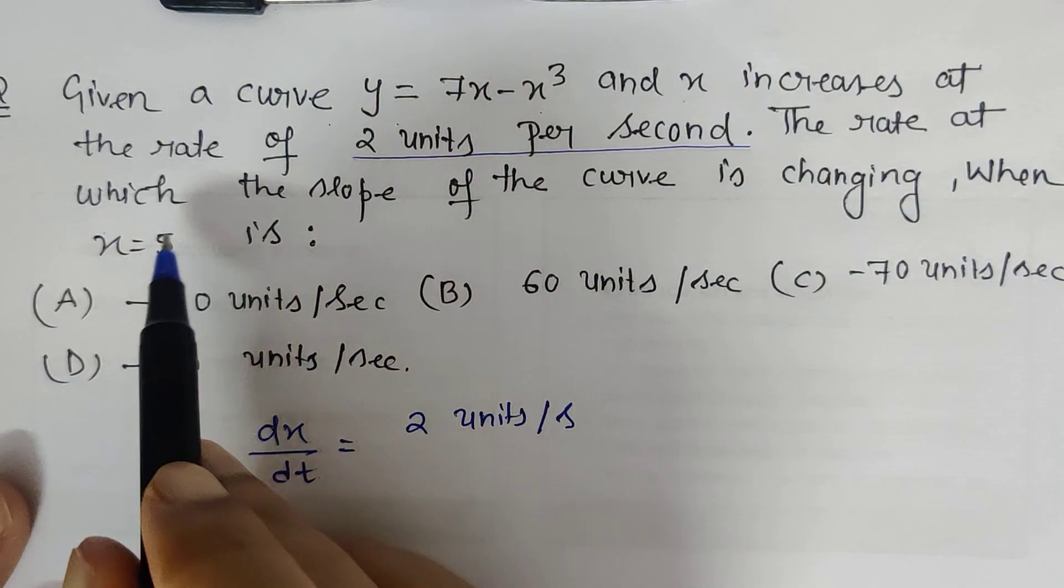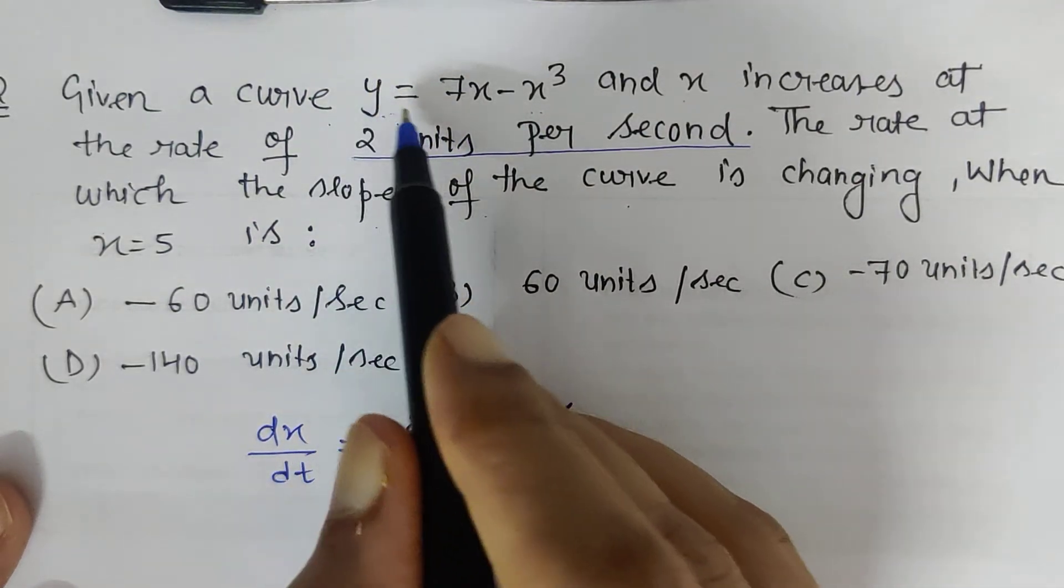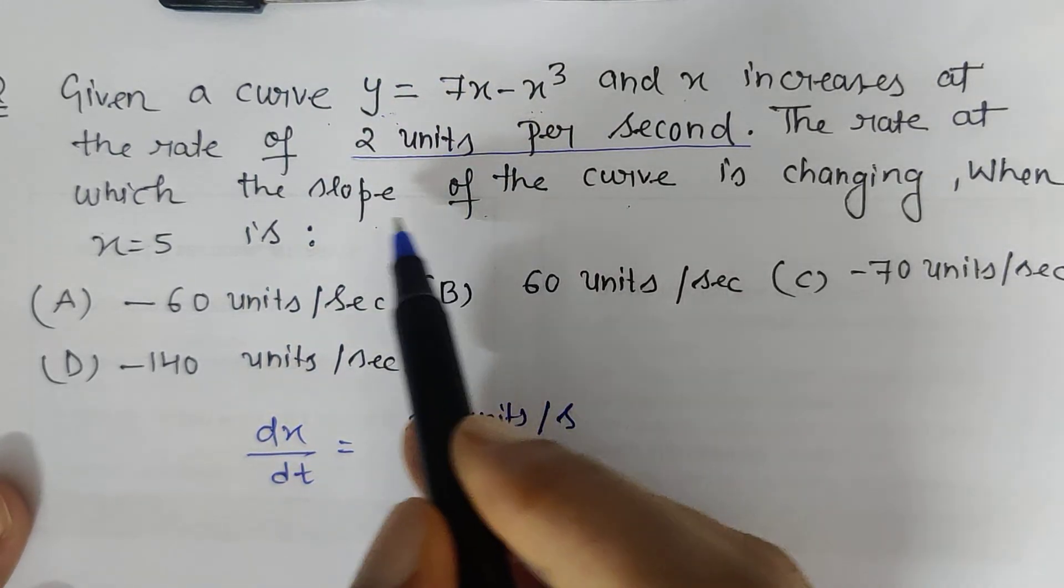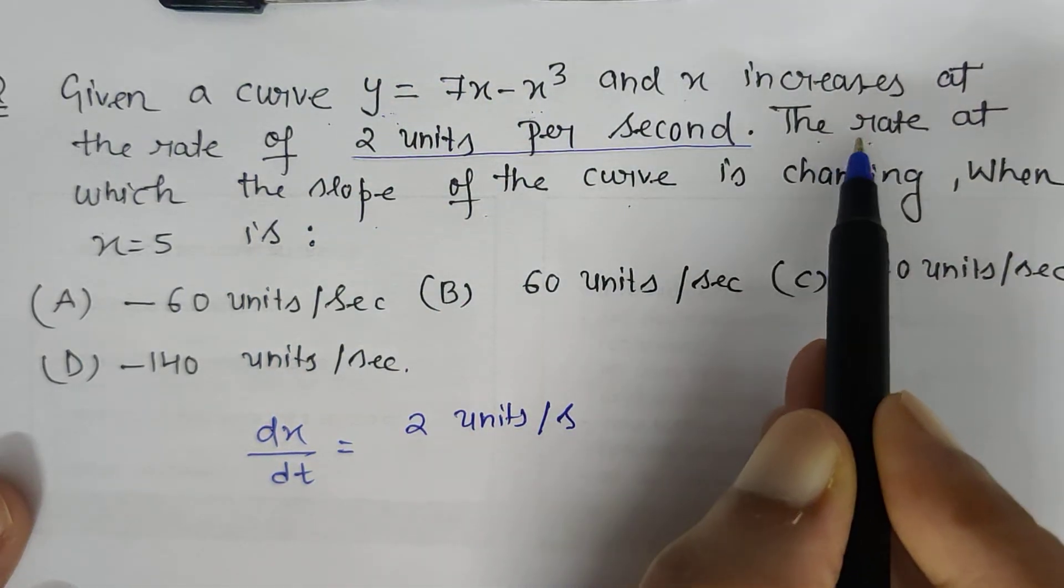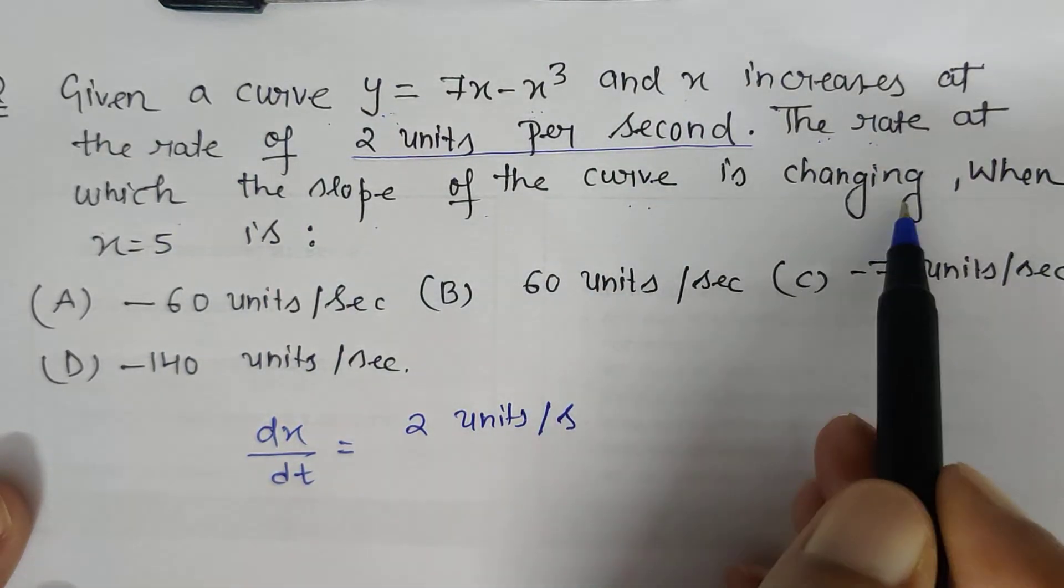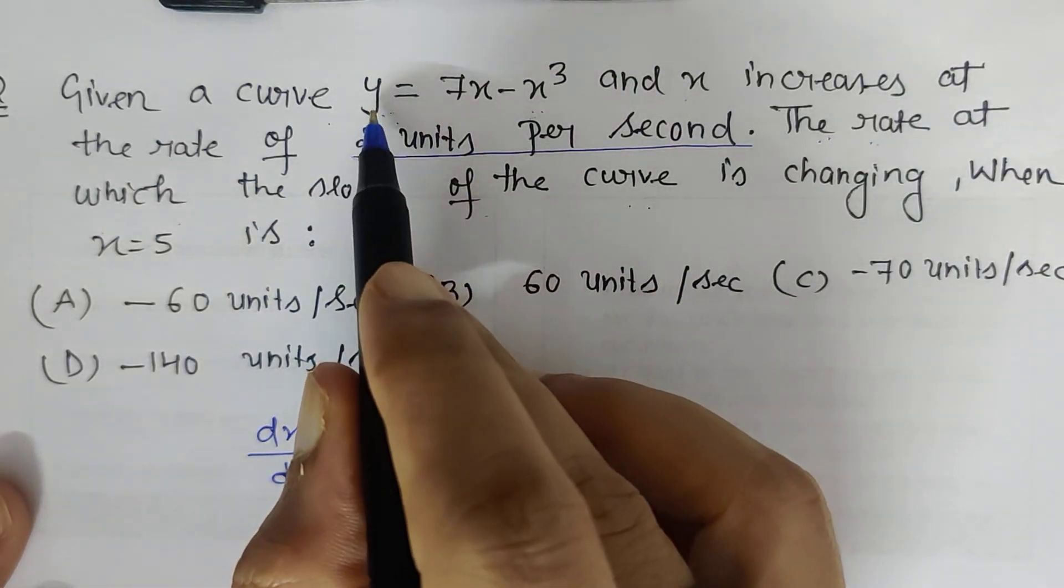The rate at which the slope of the curve is changing - this is my curve, and to find the slope we have to differentiate it once, so the slope would be dy/dx. We are asked the rate at which the slope of the curve is changing when x equals 5.